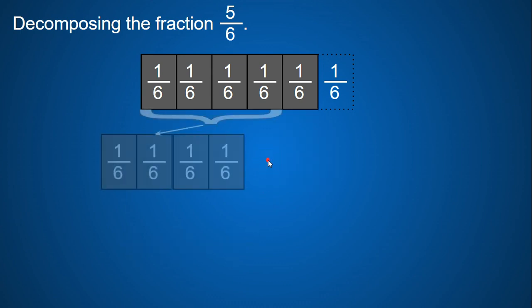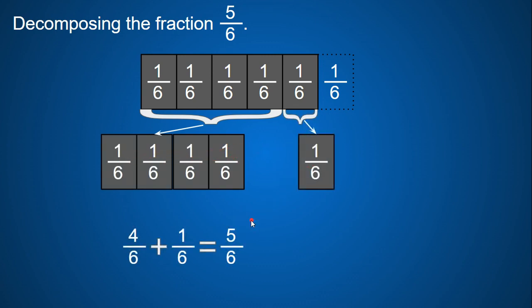And I can also break it into four-sixths and one unit fraction. So four-sixths plus one-sixth will equal five-sixths.